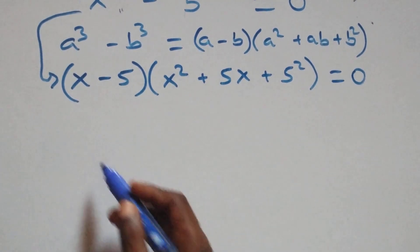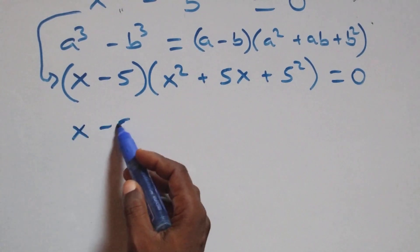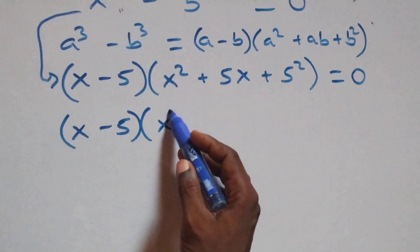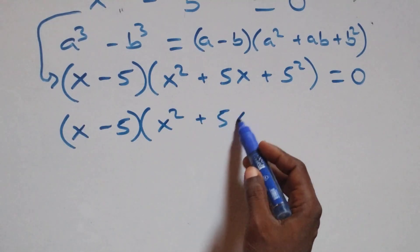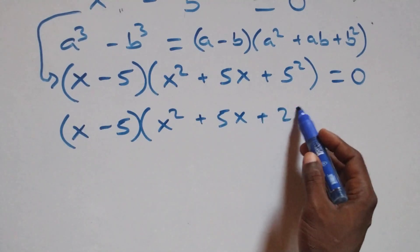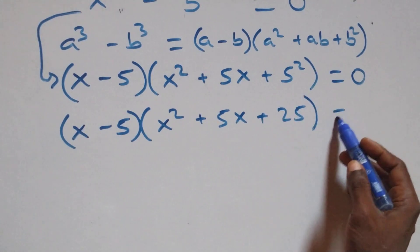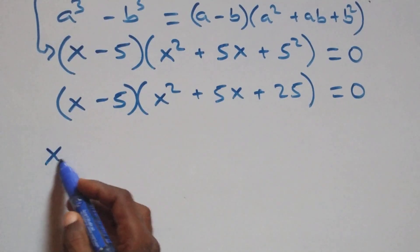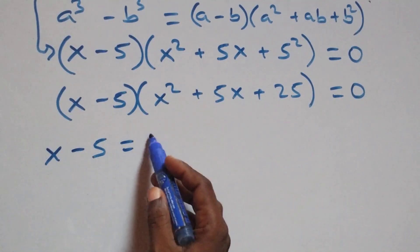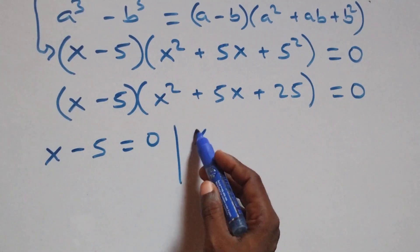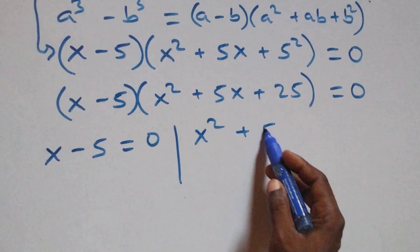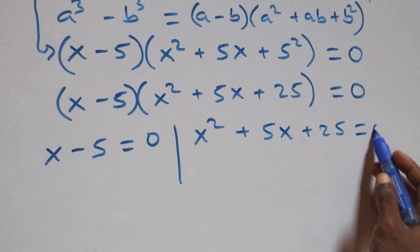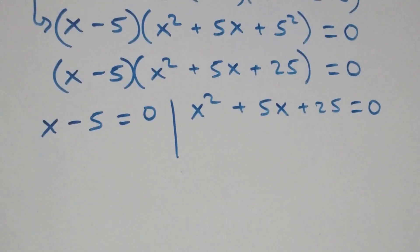For the second case, x³ minus 5³, we use the difference of cubes identity: a³ minus b³ equals a minus b times a squared plus ab plus b squared. So this factors as x minus 5 times x squared plus 5x plus 25 equals to 0. We again have two possible sub-cases: x minus 5 equals to 0, or x squared plus 5x plus 25 equals to 0.